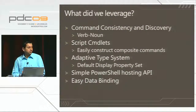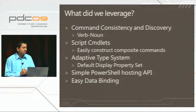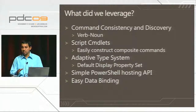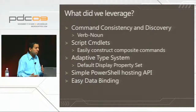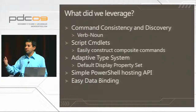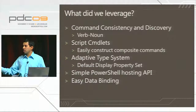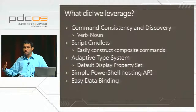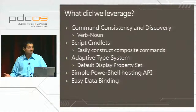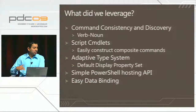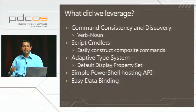So what did we leverage here? We leveraged the consistent command discovery mechanism — the verb-noun syntax. We also used script cmdlets, such as 'get-default-display-property-set'. It's pretty easy for you to define this set in a types.ps1.xml file — for any object, specify the default display property set, do 'Update-TypeData' and specify that file, and it's taken care of. We saw the simple PowerShell hosting APIs and how easy it is to do data binding with these APIs.